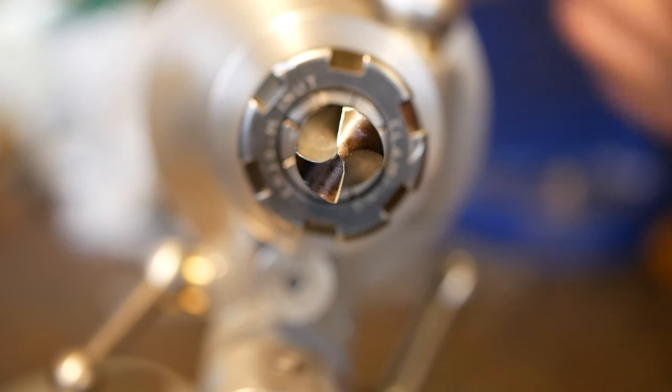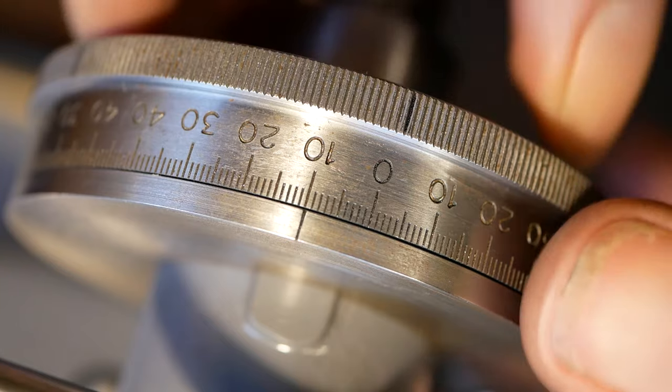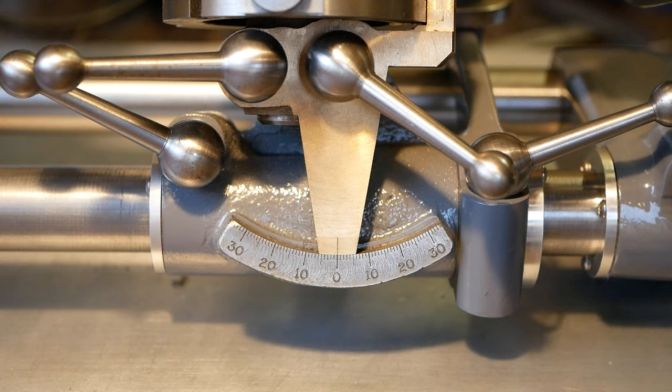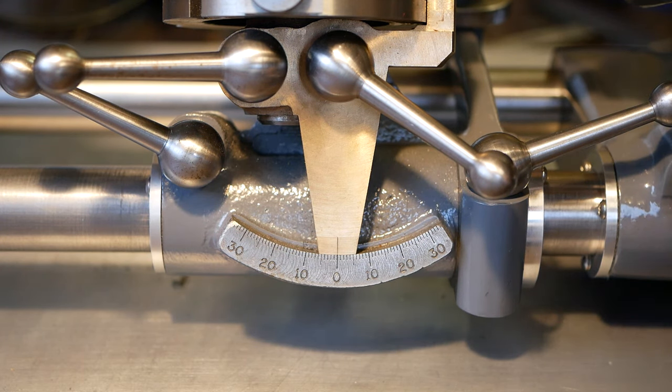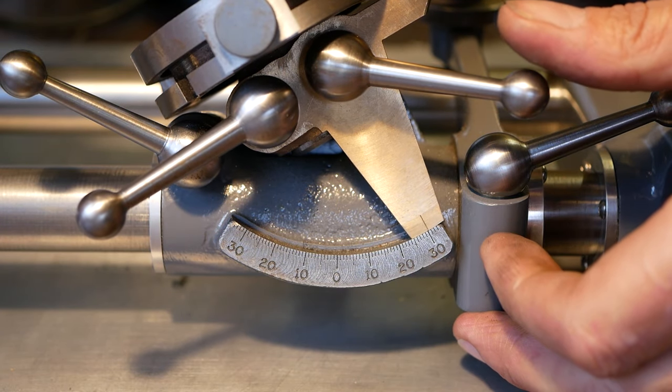The spindle dial is set to 25 degrees. Then before grinding the spindle is rotated so the dial reads zero. For a 118 degree point angle on the drill, the lower tilting bracket is adjusted to read 31 degrees.